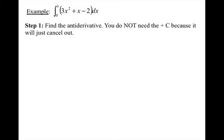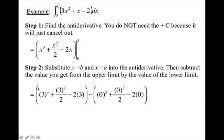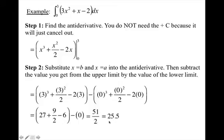So now let's look at an example. We want to find the area underneath this curve from 0 to 3. Your first step is to find the antiderivative. You do not need the plus c because it will just cancel out. So I find the antiderivative, add 1 to the exponent, divide by the new exponent. I get x cubed plus x squared over 2 minus 2x. Now notice my notation here is I still haven't done anything with the 0 and the 3. So I bring it along and this symbol represents evaluate from 0 to 3. Now I'm going to substitute b and a into the antiderivative, then subtract the value you get from the upper limit by the value of the lower limit. So I'm going to plug in 3 first for x minus the value I get when I plug in 0. When I simplify this, I will get 51 over 2, which is approximately 25.5.